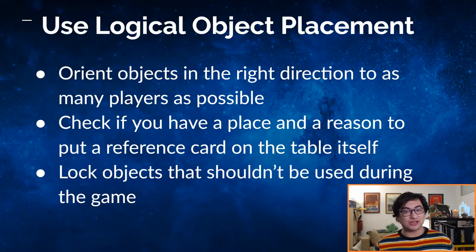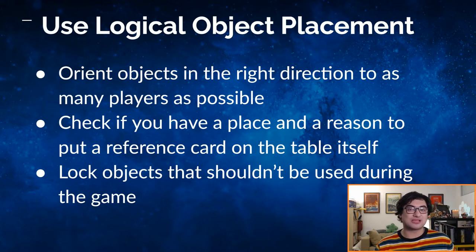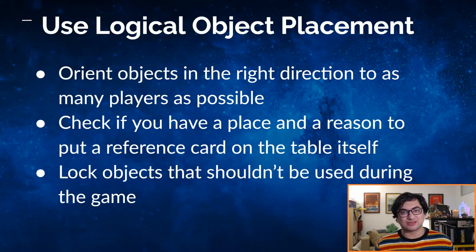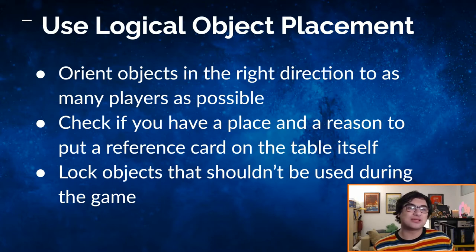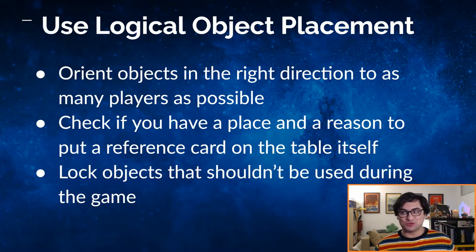Orient objects in the right direction for as many players as possible. Check if you have a place and reason to put a reference card on the table itself — this can be really handy so players can just double-click it, bring it into focus, and have a quick guide without going back through the rulebook. This actually gives you an advantage over physical games when you can have references split into more contextual situations. Also, lock objects that shouldn't be moved during gameplay — for example, if a player board is always present, lock it so players can't accidentally pick it up and throw their pieces everywhere.